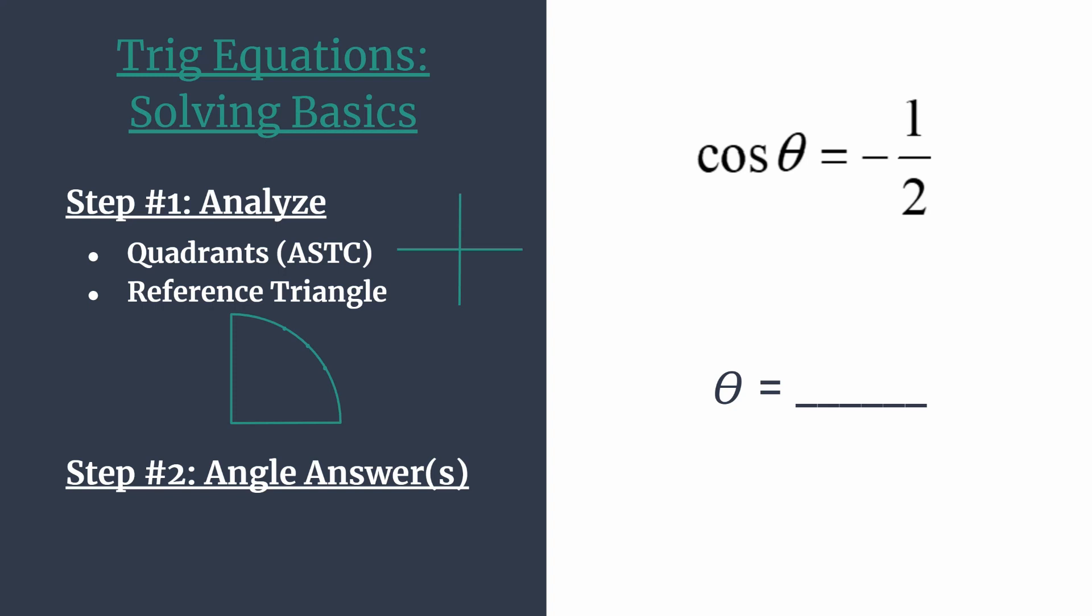So work your way around from quadrant one, go counterclockwise, and label ASTC. And this tells you which trig functions are positive in these quadrants.